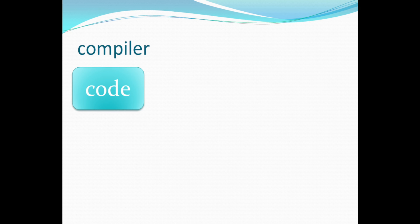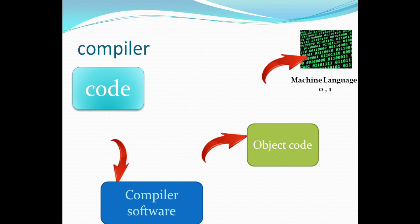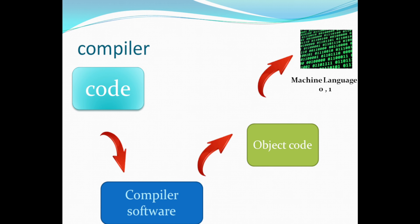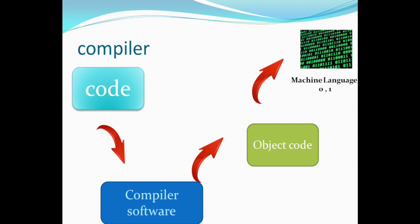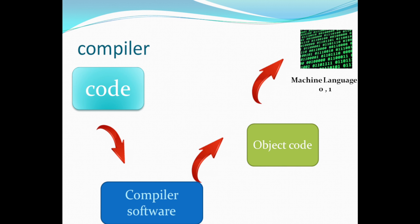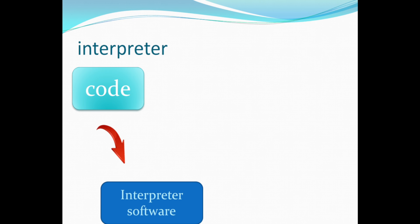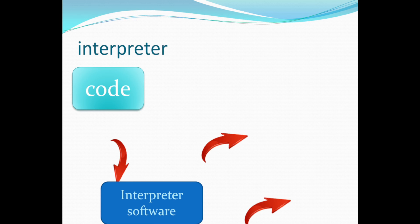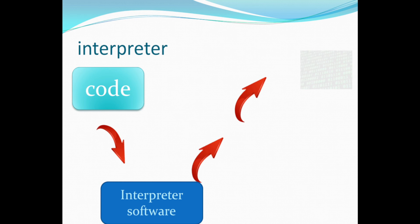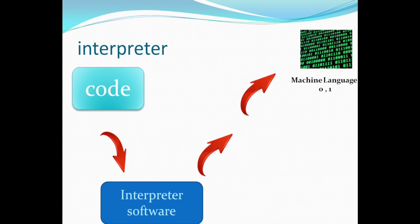Next, compiler. English code is converted into object code by using a compiler. That object code is later converted into machine language. If our program has 50 lines, the compiler will read all 50 lines and give you the result. With interpreter, it converts English code into machine language directly — there is no intermediate code like object code.